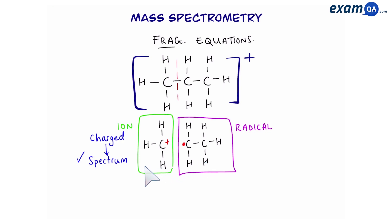The ion will be charged, and therefore it will make its way through the machine and become part of the spectrum. The radical, because it's uncharged, will not be detected. This fragmentation can also be written as an equation. The propane ion will break down into its two fragments. One is an ion, and one will be a radical.